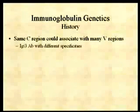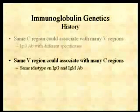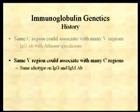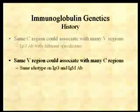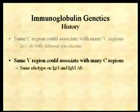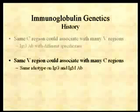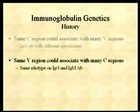The sequence studies also showed that the same variable region could actually be associated with many different constant regions. For example, you could find an IgM and an IgG molecule that had the same idiotype. And the idiotype, remember, is a variable region marker, so it meant they had the same variable region. So here you have the same variable region on two different classes of immunoglobulin. How can you have the same constant region associated with a lot of variable regions, or the same variable region associated with a lot of different constant regions?